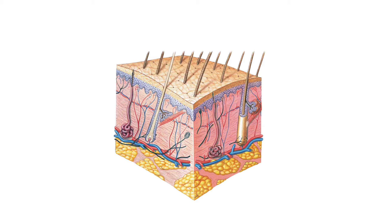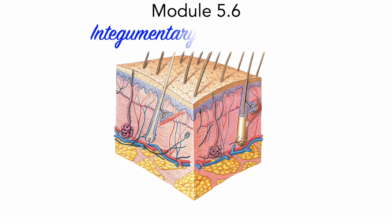Thus far in Module 5, we have been studying the major organ of the integumentary system, namely the integument, or skin. We now turn our focus to other organs of the integumentary system, which are classified as accessory organs. In Module 5.6, we will examine the anatomy and physiology of hair, describe the processes that produce hair, and explain the structural basis for hair texture and color.